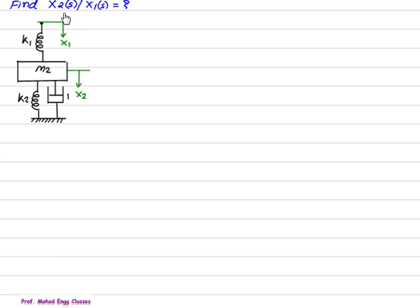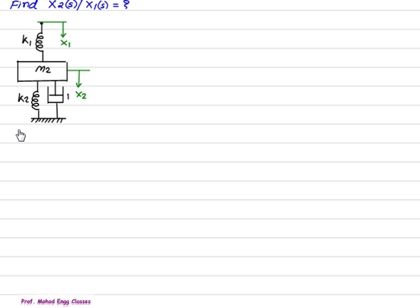Find the transfer function x2(s)/x1(s) for the system shown here. We have a spring k1 connected to m2; k2 is also connected to m2 but one end is connected to the ground, and we have a damper. The displacement at k1 is shown as x1, displacement at m2 is x2, displacement of k2 is also x2, and the damper is also x2. The other displacement for k2 and the damper is ground.